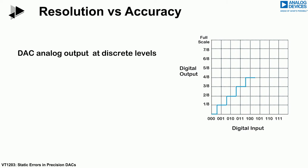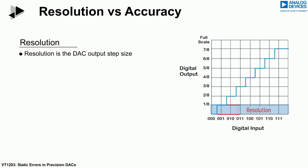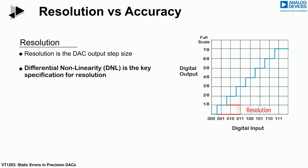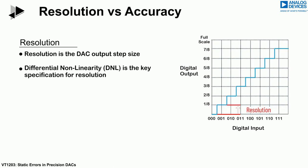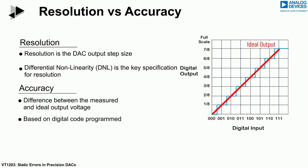These discrete levels, or steps, correspond to the resolution of the DAC. The key specification to think about here is differential non-linearity, or DNL. Another key point to note in relation to a DAC is accuracy. The accuracy represents the difference between the measured output voltage and the expected output voltage, based on the programmed digital input code.